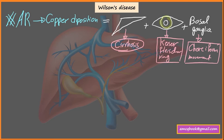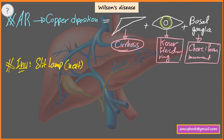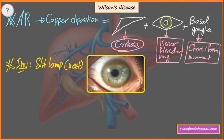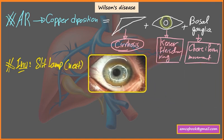For investigation, the first and initial step is a slit lamp test to visualize the Kayser-Fleischer rings, as shown in the pictures here.